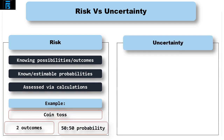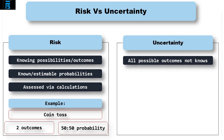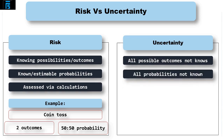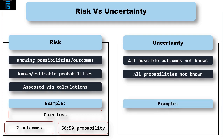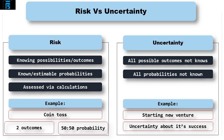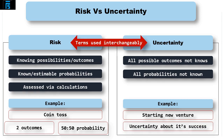With uncertainty, either some of the probabilities are not known, or potentially some of the possible outcomes are not known, or maybe a mixture of the two. When starting out on a new venture, you may have no real idea how likely it is to be successful — this is uncertainty. Although this distinction may be important for a multiple choice question in your exam, the terms risk and uncertainty are often used interchangeably in everyday language.